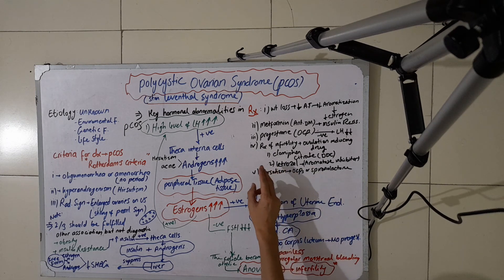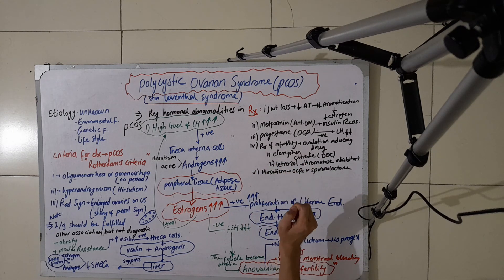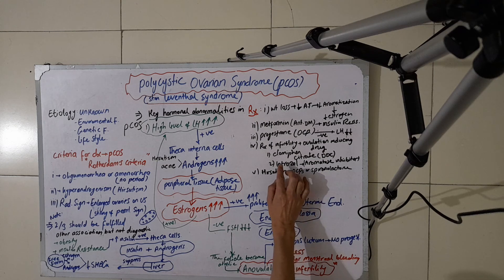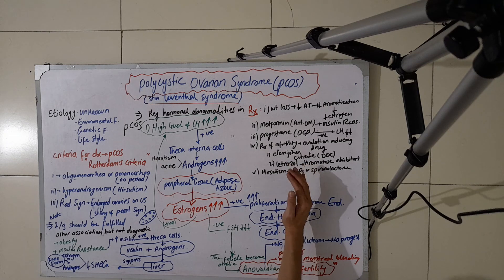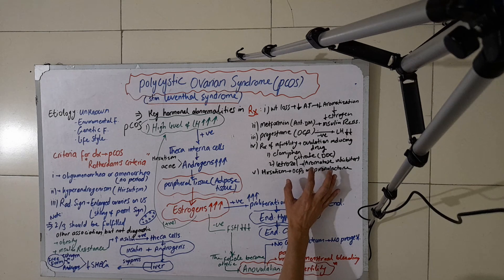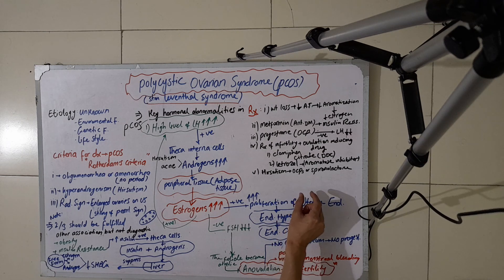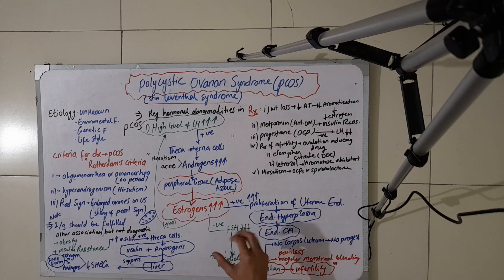Since the main complaint of patients with PCOS is infertility, the treatment of infertility involves ovulation-inducing drugs. These include clomiphene citrate or letrozole. Letrozole is also a drug of choice and is actually an aromatase inhibitor. For hirsutism, we give patients oral contraceptive pills and spironolactone. This covers the main points about PCOS.